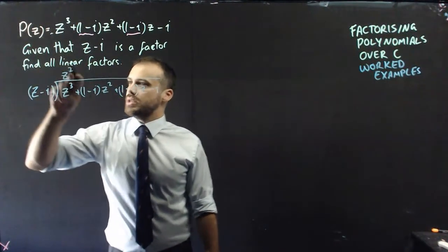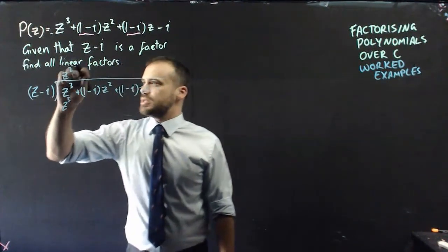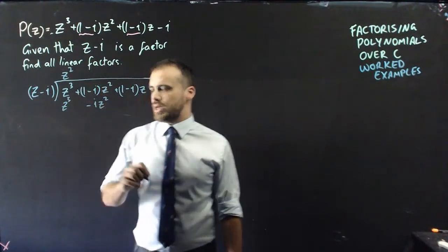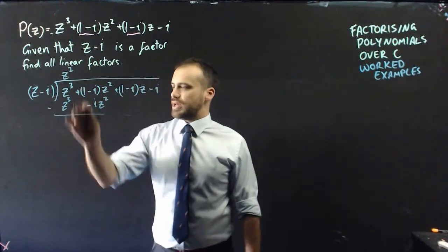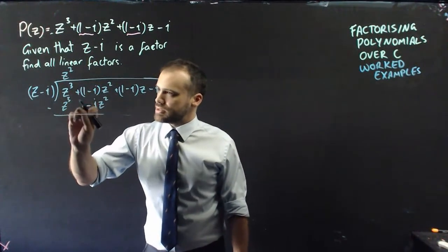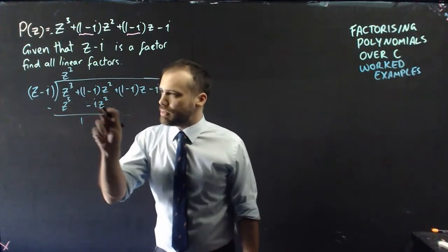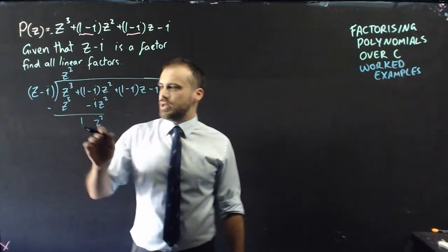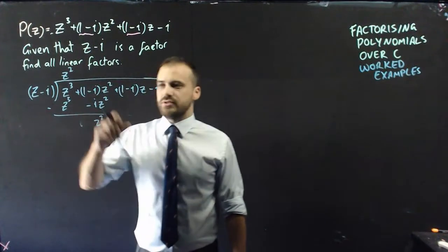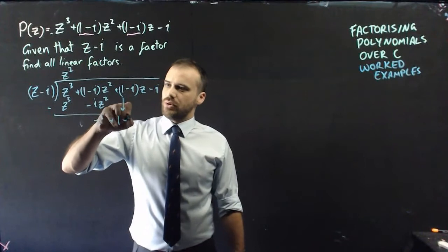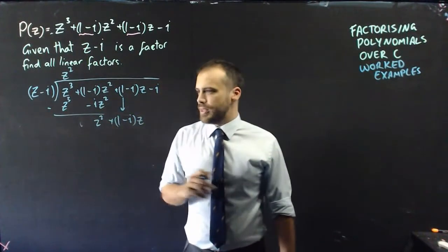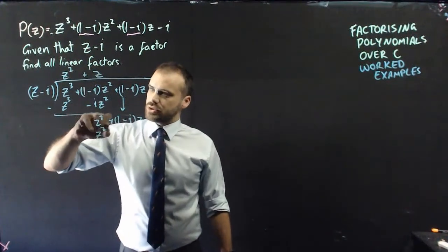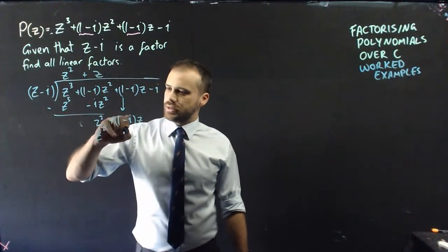z cubed divided by z is z squared. z squared times z is z cubed. z squared times negative i is negative i z squared. Now, when we subtract that from that, z cubed minus z cubed is 0. So, 1 minus 0 is 1, and minus i minus minus i is 0i. So, now I have 1 z squared. Not 1 plus z squared, just 1 lot of z squared. In other words, I have z squared. And, I can bring down this plus 1 minus i, z. Alright.